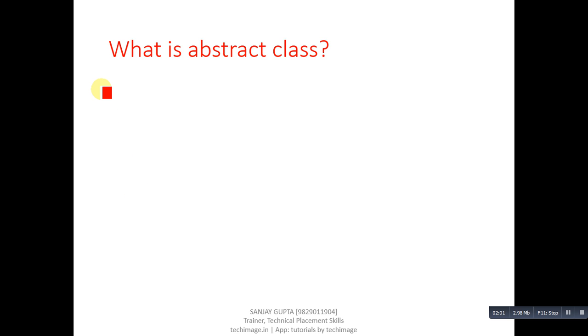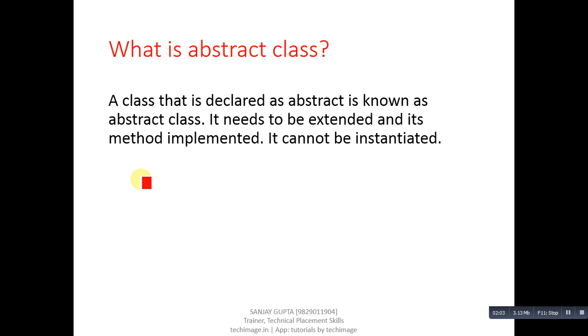Next question, what is abstract class? Answer is a class that is declared as abstract is known as abstract class. It needs to be extended and its method implemented. It cannot be instantiated.